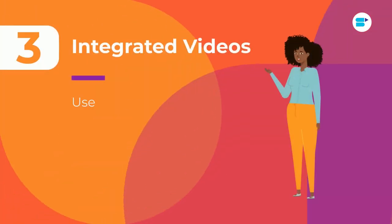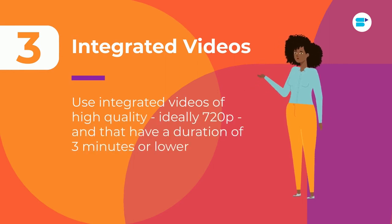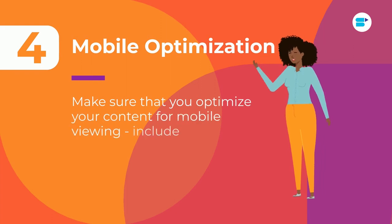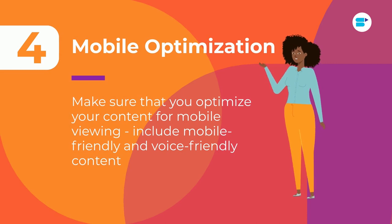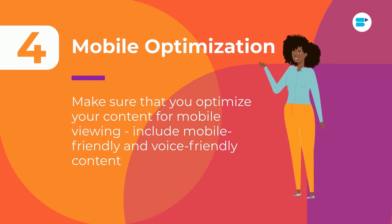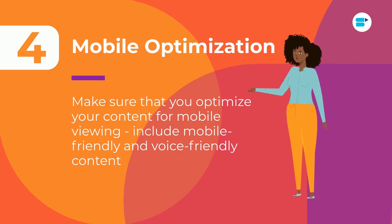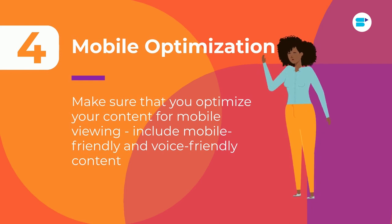Number three: use integrated videos of high quality, ideally 720p, with a duration of three minutes or lower. Number four: make sure that you optimize your content for mobile viewing — include mobile-friendly and voice-friendly content. Amazon will resize images and optimize content for mobiles automatically. Along with that, make sure your product listings are simple and tailored to your mobile shoppers. Amazon will show only the first three bullet points in your product description, so ensure you give the most relevant information within the first three points.